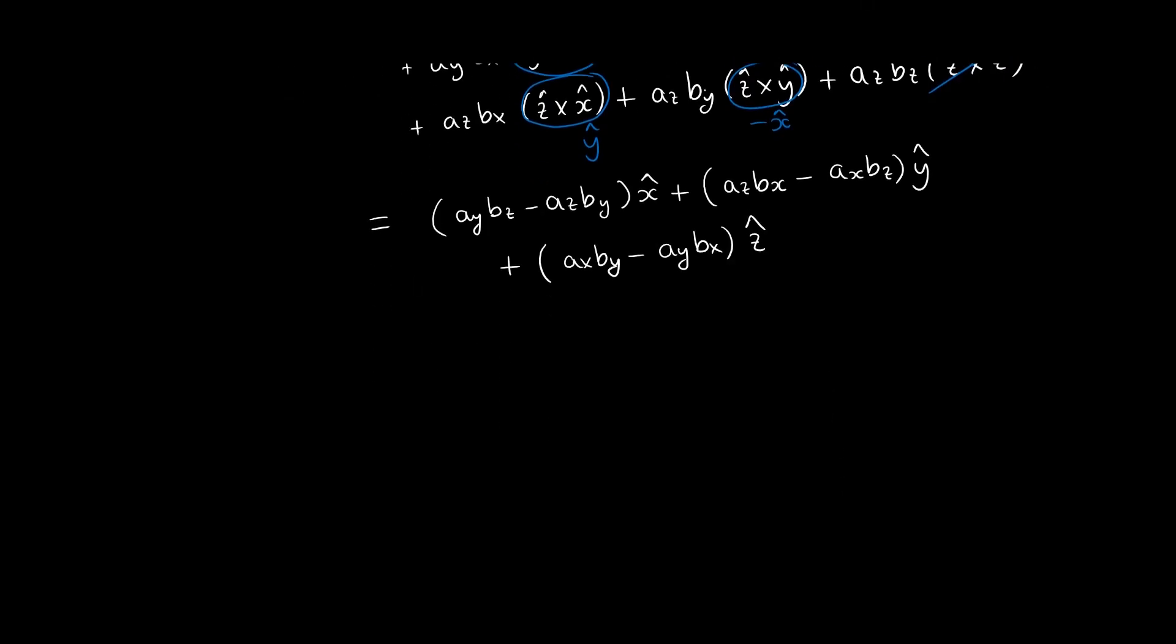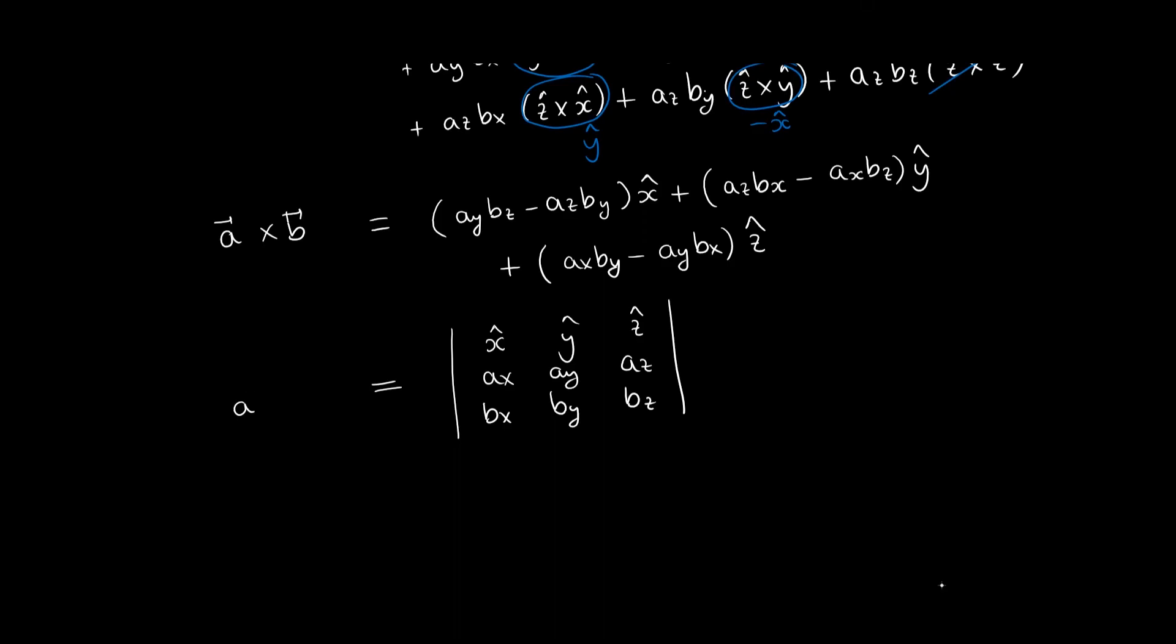When we learn about determinants, we will see that to remember this mathematical form, we can just write the following determinant, which gives us a nice simple way to write the cross product in terms of the components of the vectors.